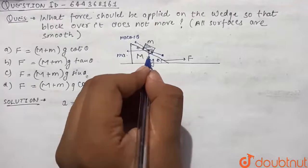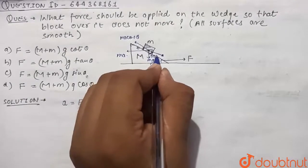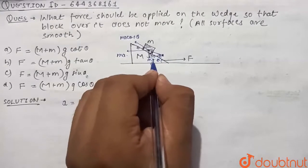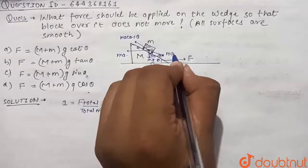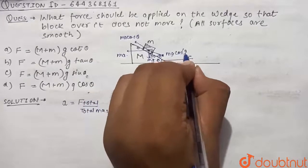So we can say that the component of ma upside is ma cos theta. And since this is theta, this will be 90 minus theta, so the component of mg towards downside will be mg cos 90 minus theta.